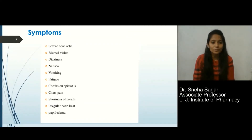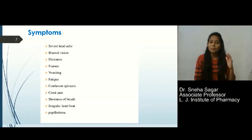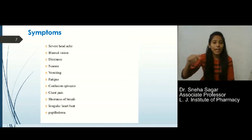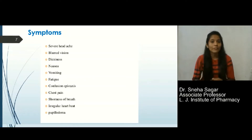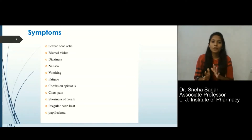Symptoms of hypertension vary according to the severity of the disease. At prehypertension, patients may not have chest pain or shortness of breath. But as severity increases, patients may suffer from chest pain, shortness of breath, and irregular heartbeat. In mild hypertension, patients may have headache, blurred vision, nausea, vomiting, fatigue, etc.